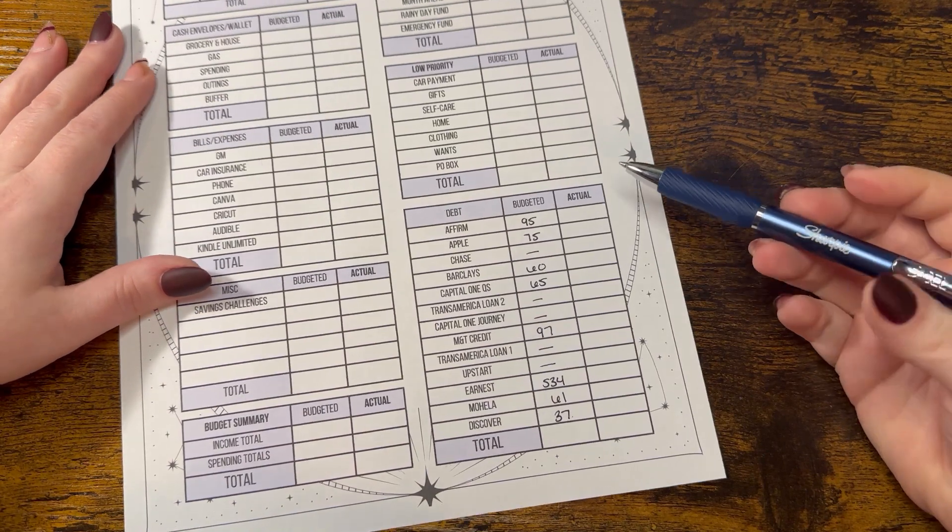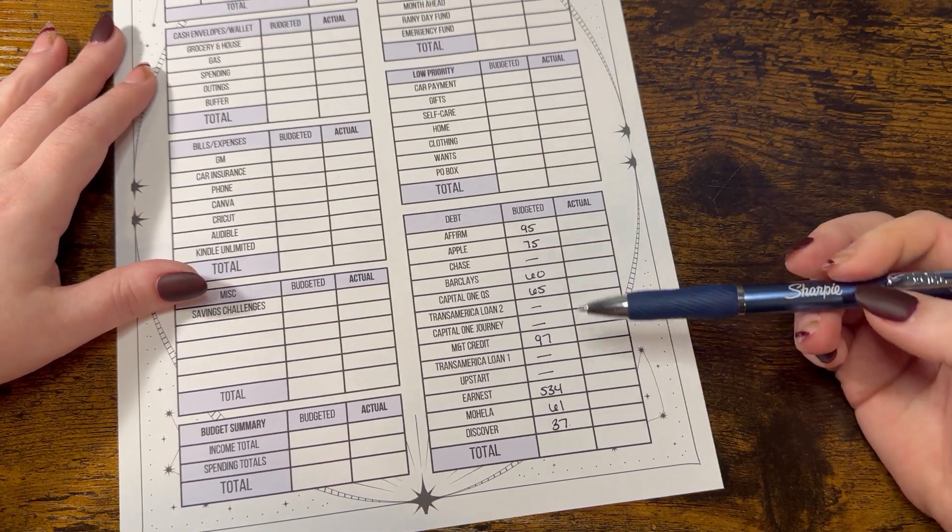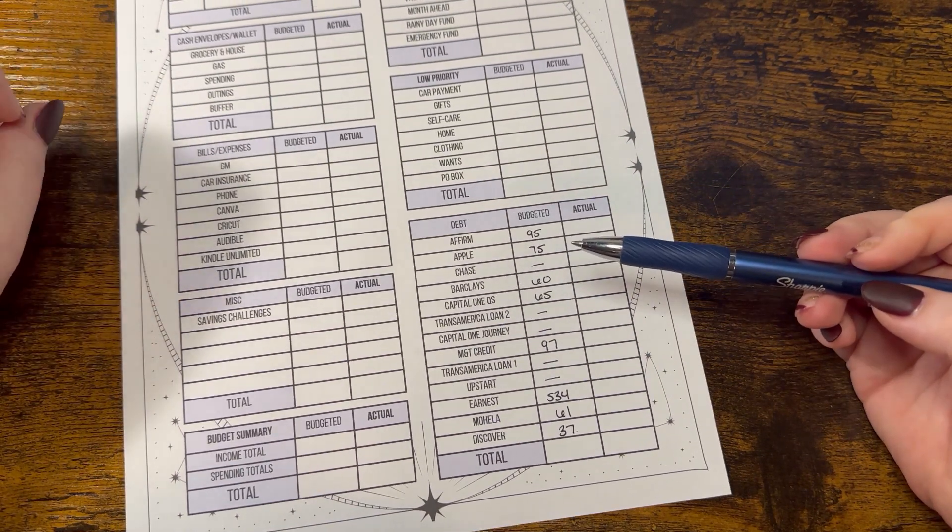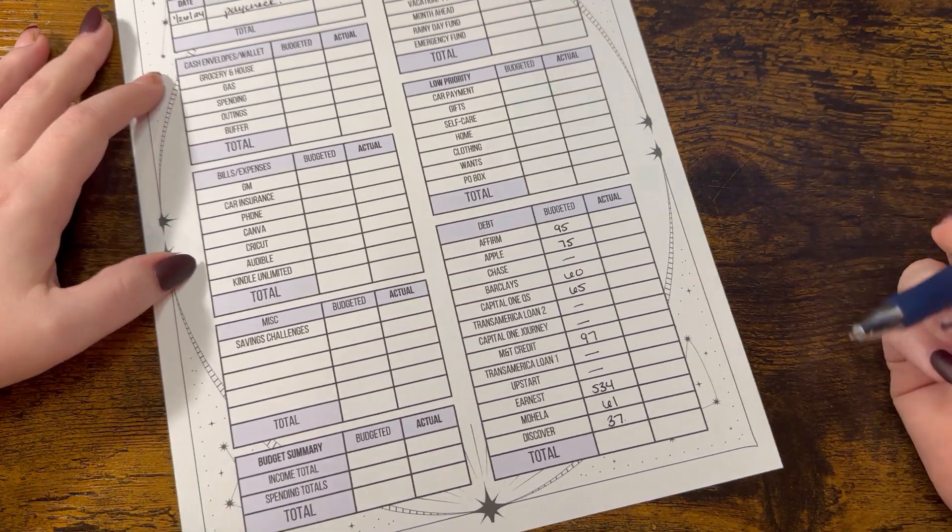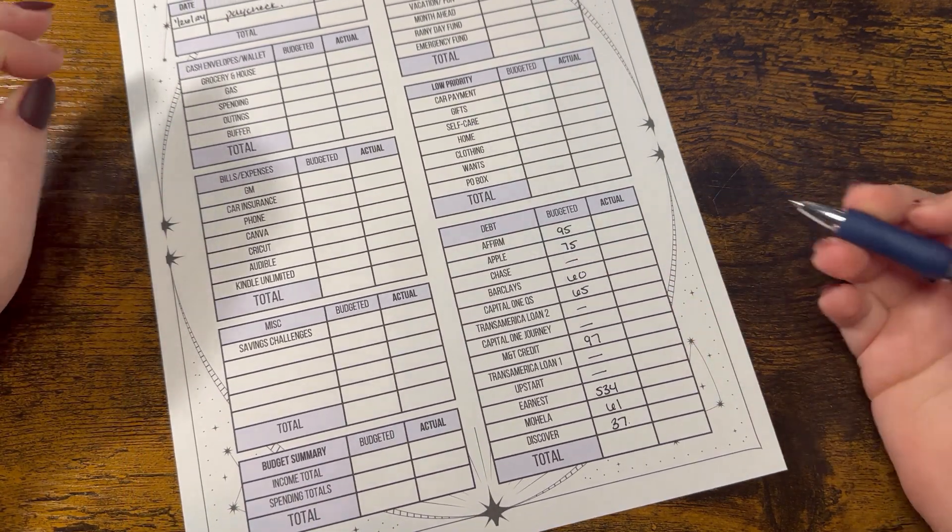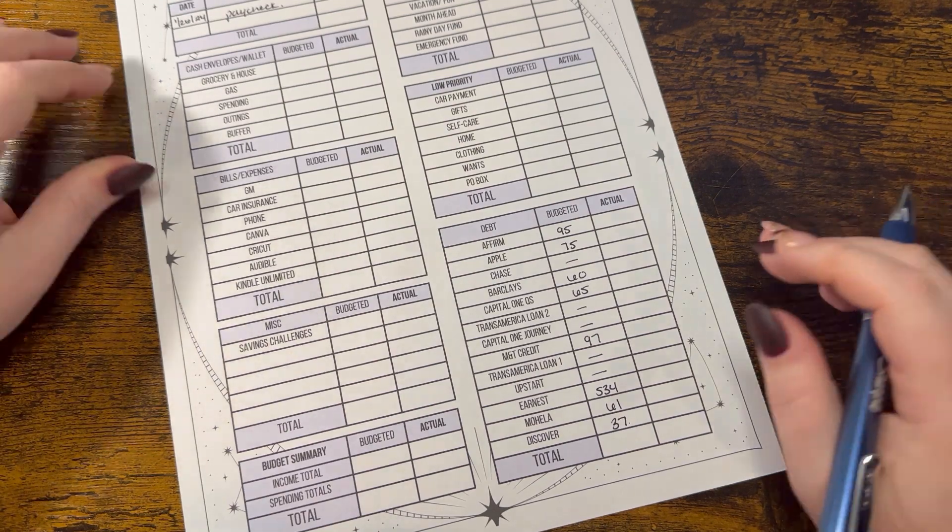So these are just the minimum payments. Anything that's extra at the end is going to go towards my Apple card, because that's the debt that we're focusing on paying off first.